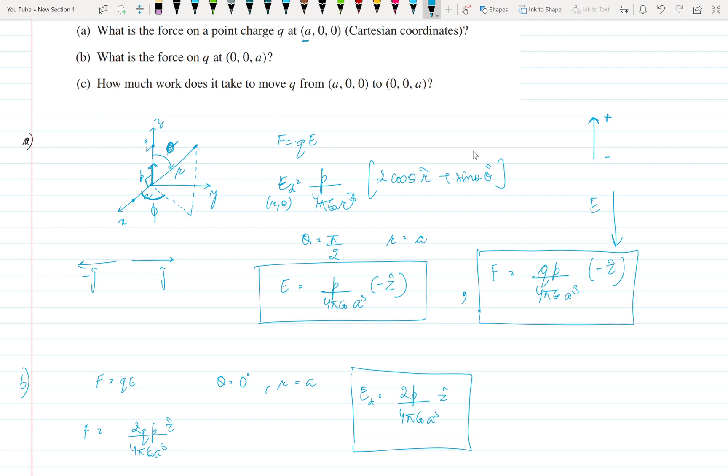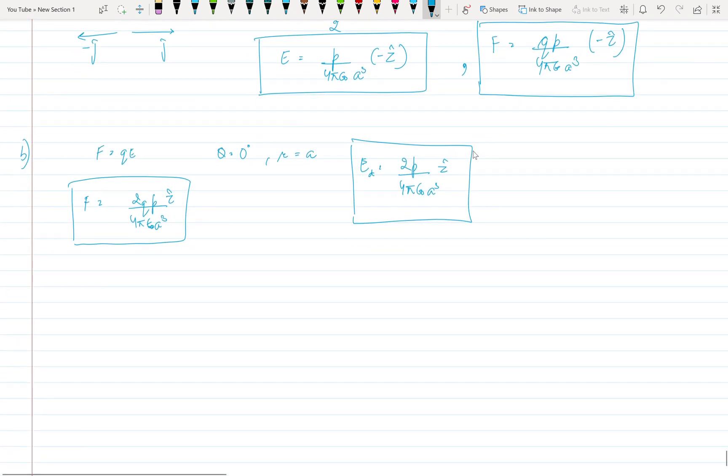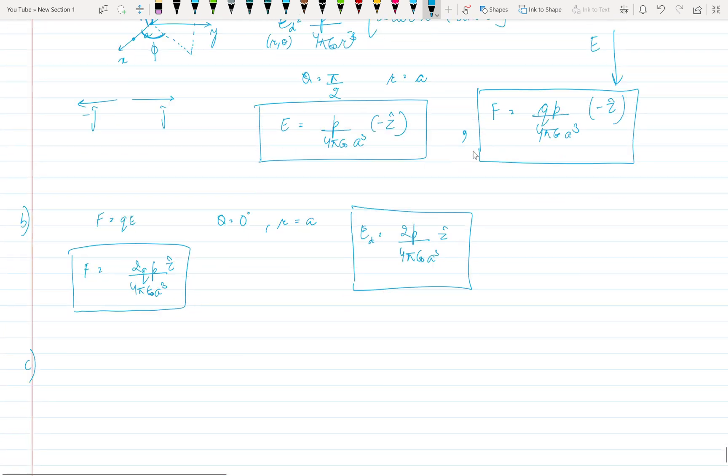And what will be force? It will be 2 Q P upon 4 pi epsilon naught a cube Z cap. So the direction of electric field is opposite here because the charge is somewhere here.